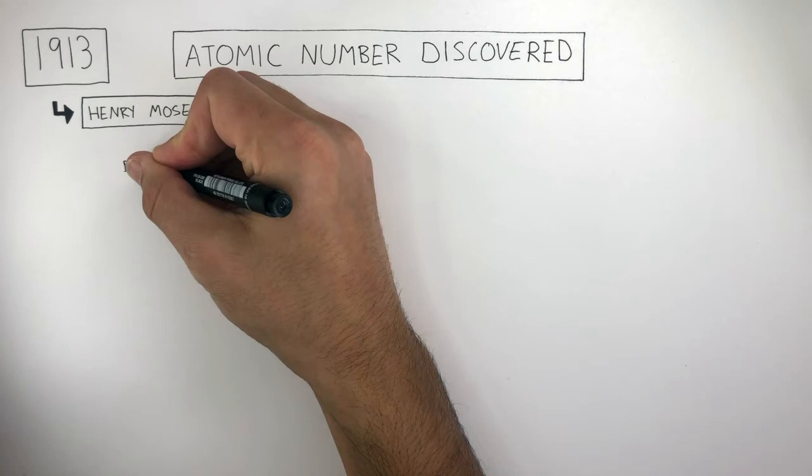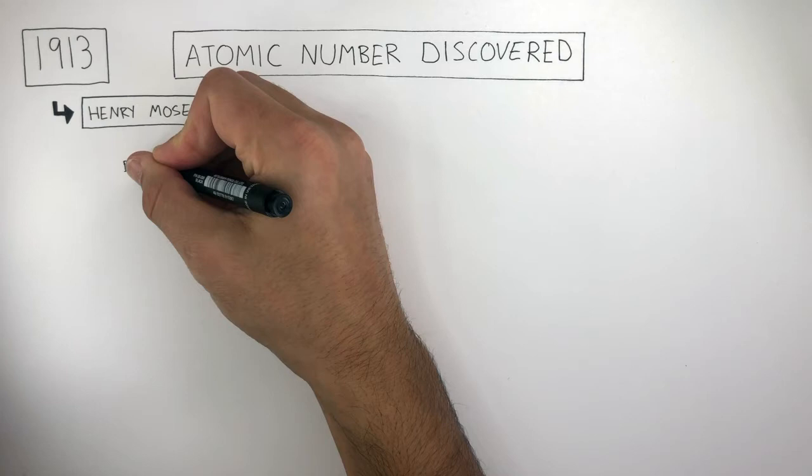In his experiment, he looked at different elements, including aluminum, potassium, and iron, amongst many others.